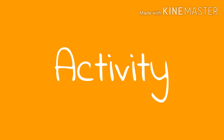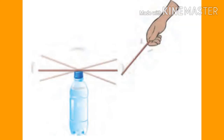Now we will observe one activity. Place a straw on a bottle, take another straw near it and observe what happens. Leave the straw on the bottle, rub the other straw against a woolen cloth and bring it near the straw on the bottle — again observe. Then take two straws, rub them both against woolen cloth, keep one on the bottle and bring the other near it. Finally, keep the rubbed straw on the bottle and take the woolen cloth used for rubbing close to it.